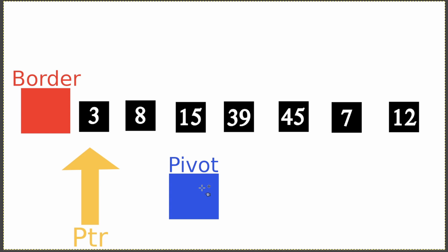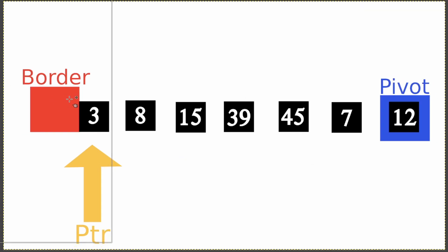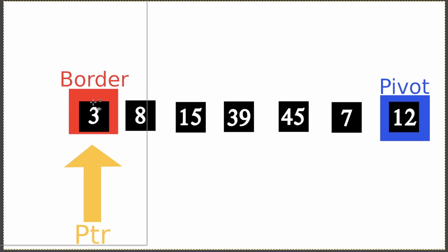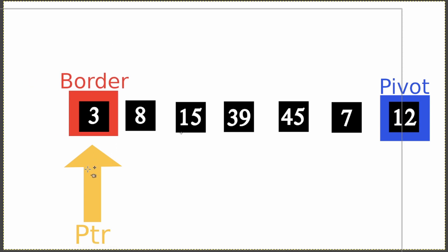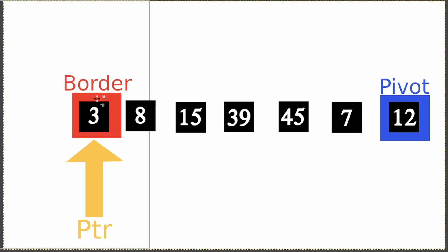The first and most important thing is selecting a good pivot point. There are various algorithms to do that — you can take the first, middle, and last point and select the median. I'm just going to use the last element, so I'll select 12. Then I want to grab the border and set it on the first element, and also set the pointer on the first element. The border means that everything to the left of the border is going to be smaller than the pivot point.